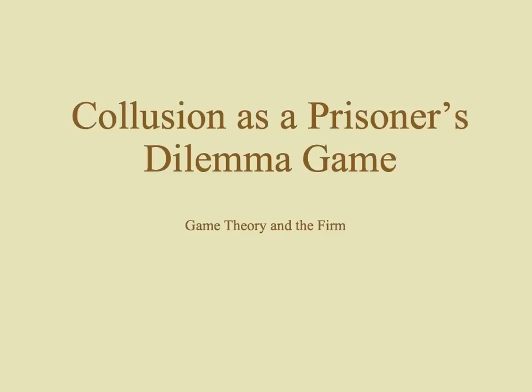The main example of game theory applied to the firm is often shown as collusion as a prisoner's dilemma game. Collusion involves firms trying to come together to set a monopoly price in an oligopoly setting, keeping quantities low and prices high, so that they get the extra producer surplus from monopoly pricing.